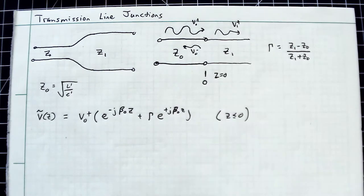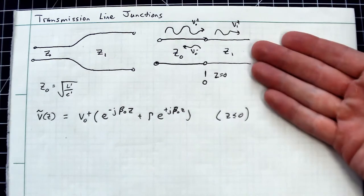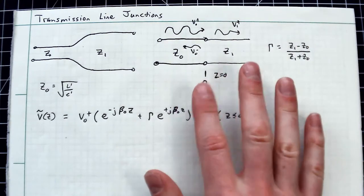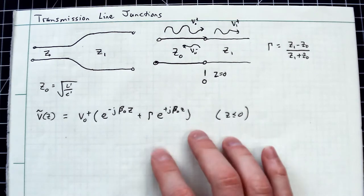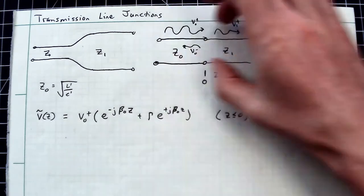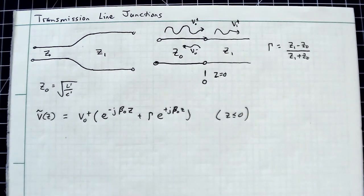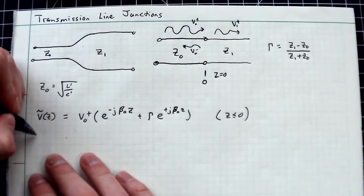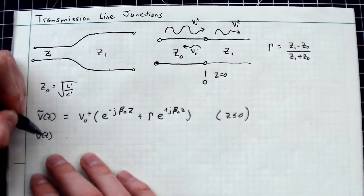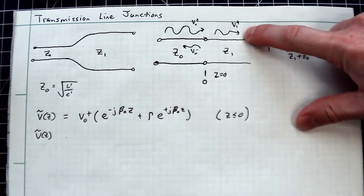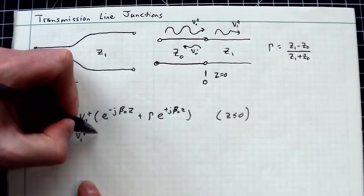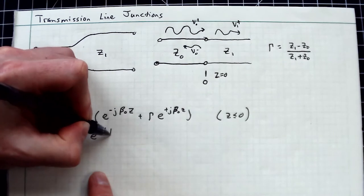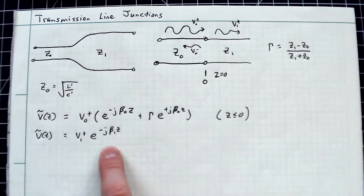If it feels like I'm just imposing certain things, that's just how partial differential equations work. In the right, I'm going to impose the assumption that there is a wave traveling to the right. I'll call it V₁⁺ e^(-jβ₁z), where Z is greater than or equal to 0.